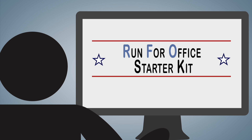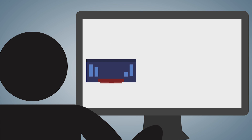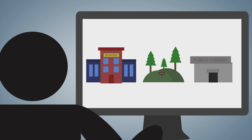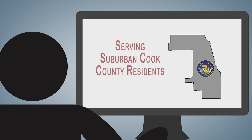The RFO, as we like to call it, is designed to help make it easy to run for your local school board, park district, library district, and even fire protection district. This new tool is available for anyone seeking to run for office in suburban Cook County only.